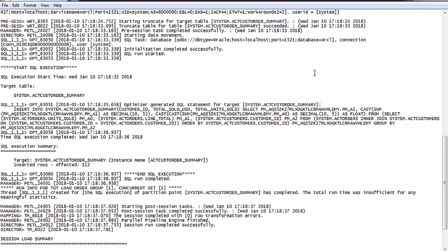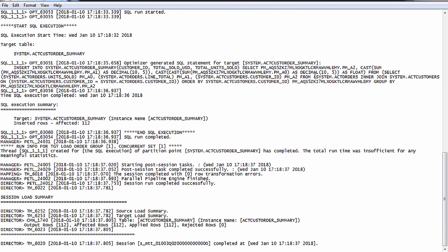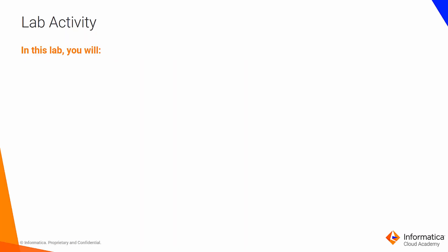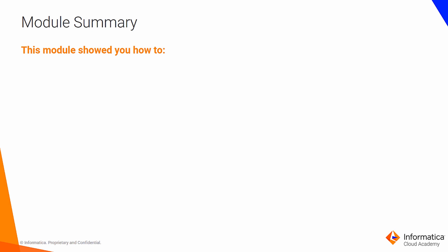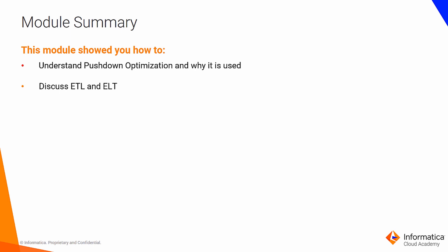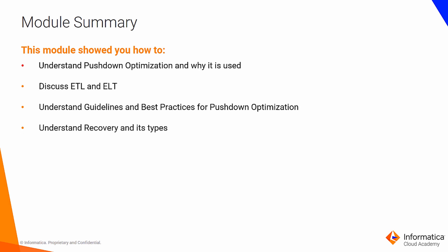This concludes the demo of full pushdown optimization. You are now ready to perform a lab in which you will create a mapping with the same source and target connection, create a mapping configuration task with full pushdown optimization enabled, and check that the target was populated using a database query. In summary, we understood pushdown optimization and why it is used, discussed ETL and ELT, discussed guidelines and best practices for pushdown optimization, understood recovery and its types, and discussed requirements driving architectural principles.